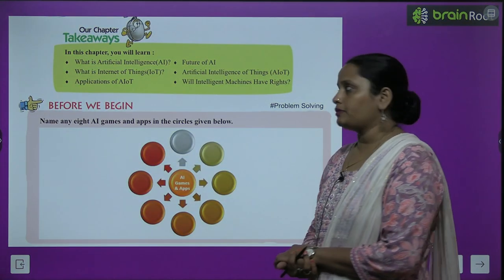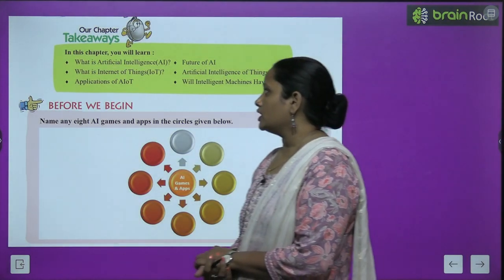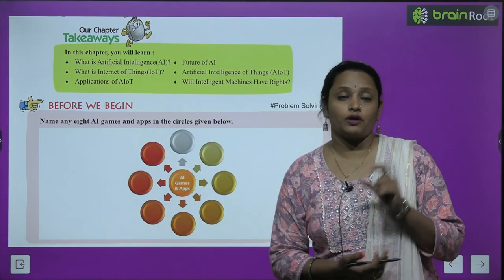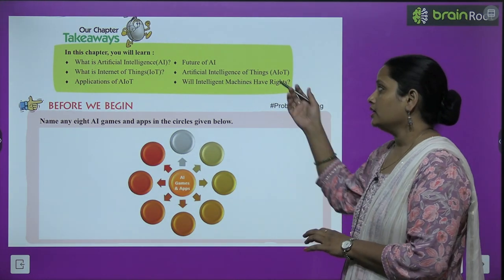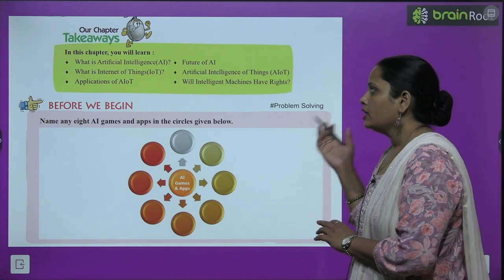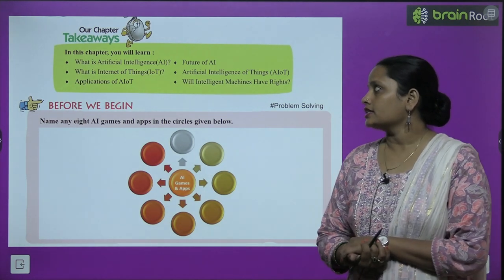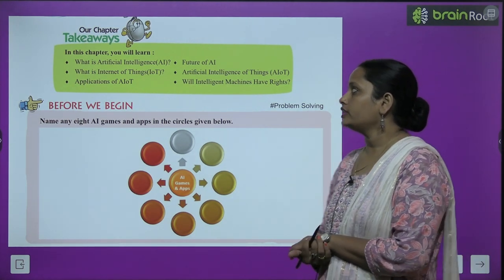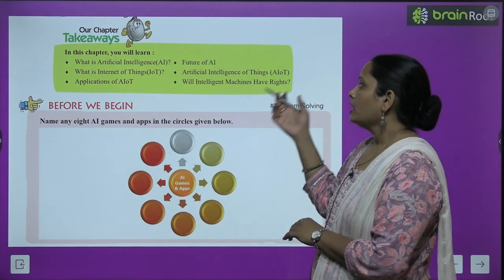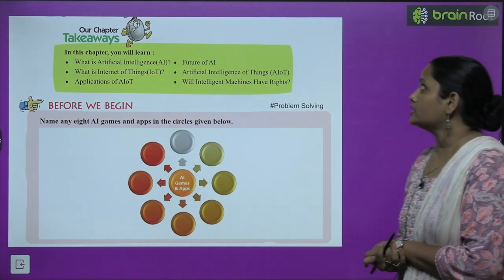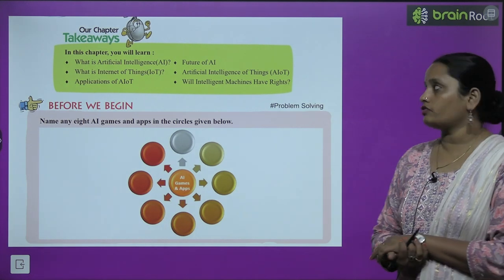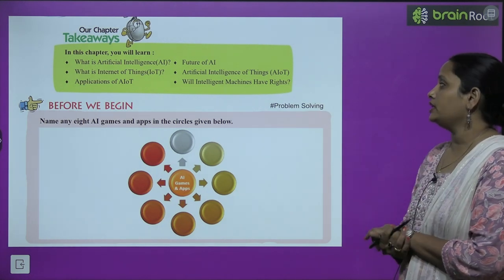So children, in this chapter we are going to learn: what is Artificial Intelligence — short form AI, what is future AI, what is Internet of Things (IOT), and what is Artificial Intelligence of Things (AIoT).